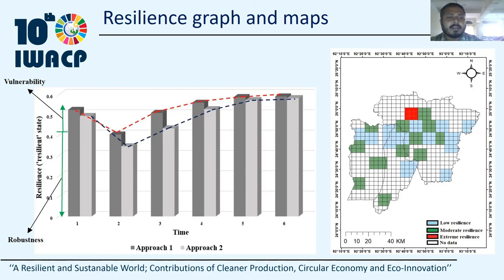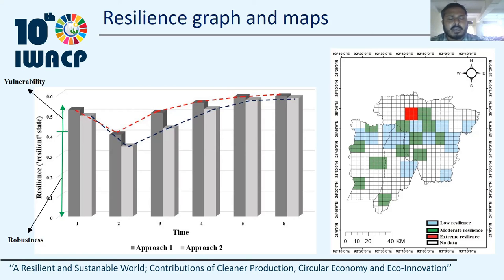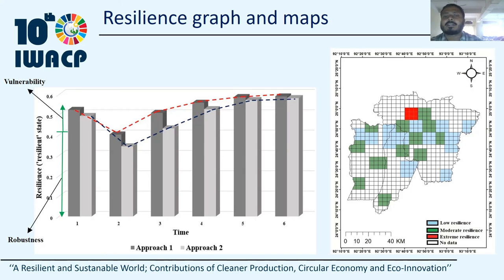As approach one provides more reliable results and the second time survey was done immediately after the flood hazard, it can be concluded that robustness is nearly 40% for the housing infrastructure in Barak Valley, meaning that 40% of the housing infrastructure can resist the impact of the flood hazard. Similarly, if we deduct the second time survey value, the vulnerability can be evaluated, which is nearly 12.1%. That means nearly 12.1% of housing infrastructure is vulnerable to flood hazard. Using all the collected values and approach one, the resilience map for all different time periods is developed. The right-hand side figure shows the resilience map for time period one.